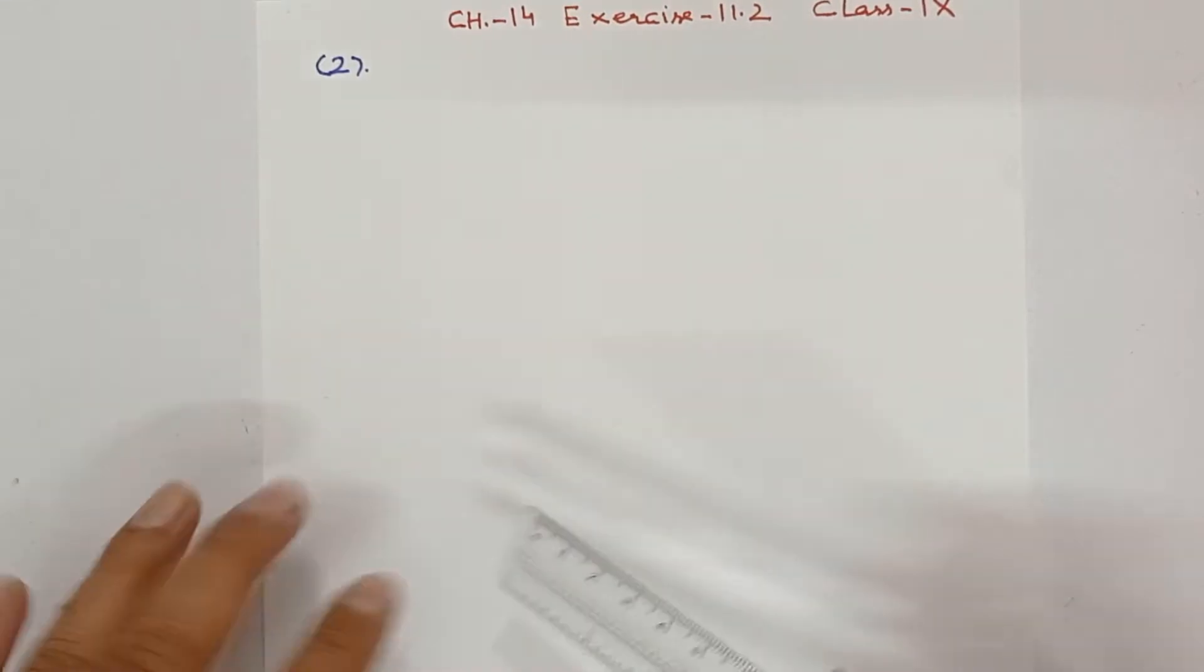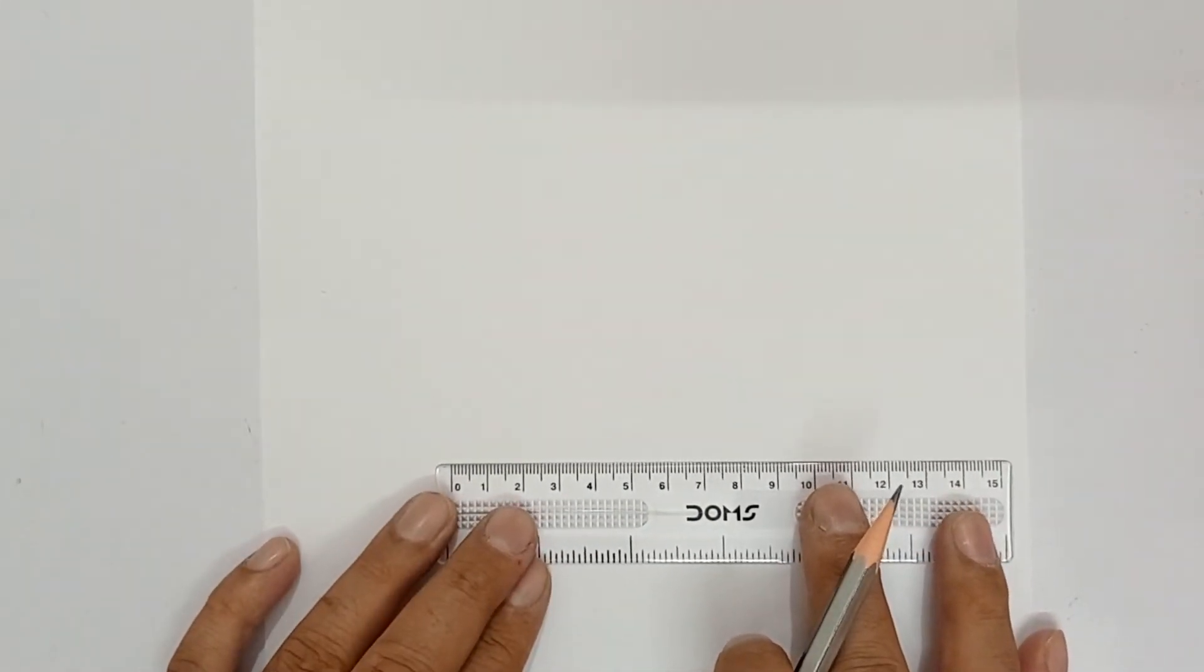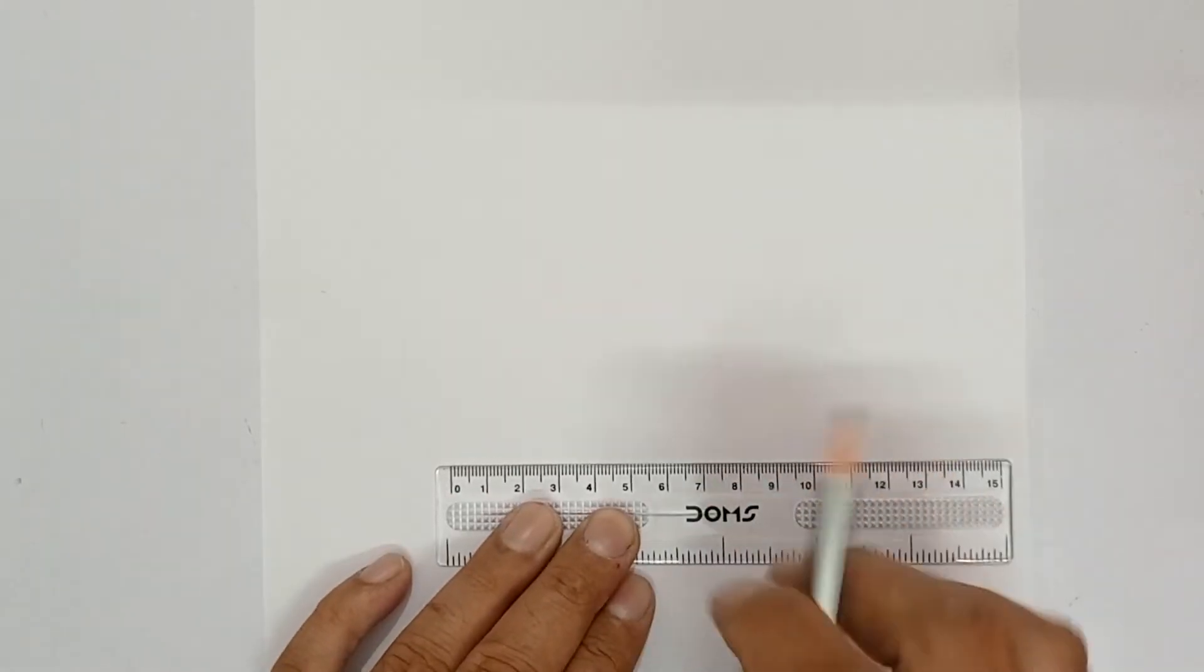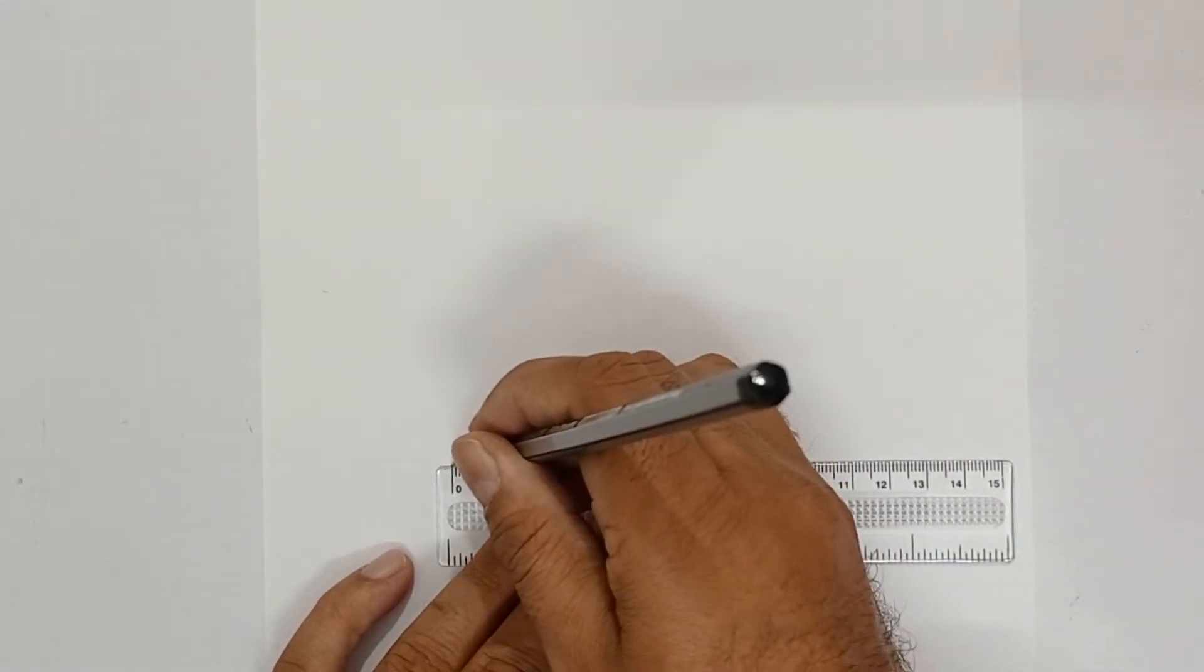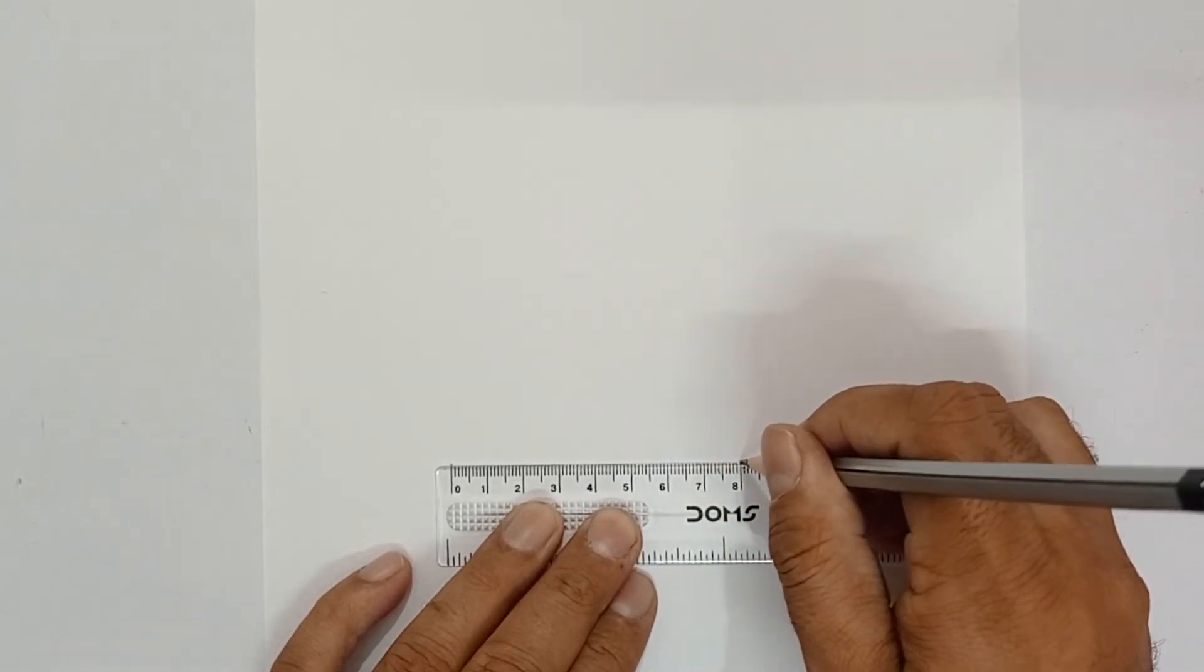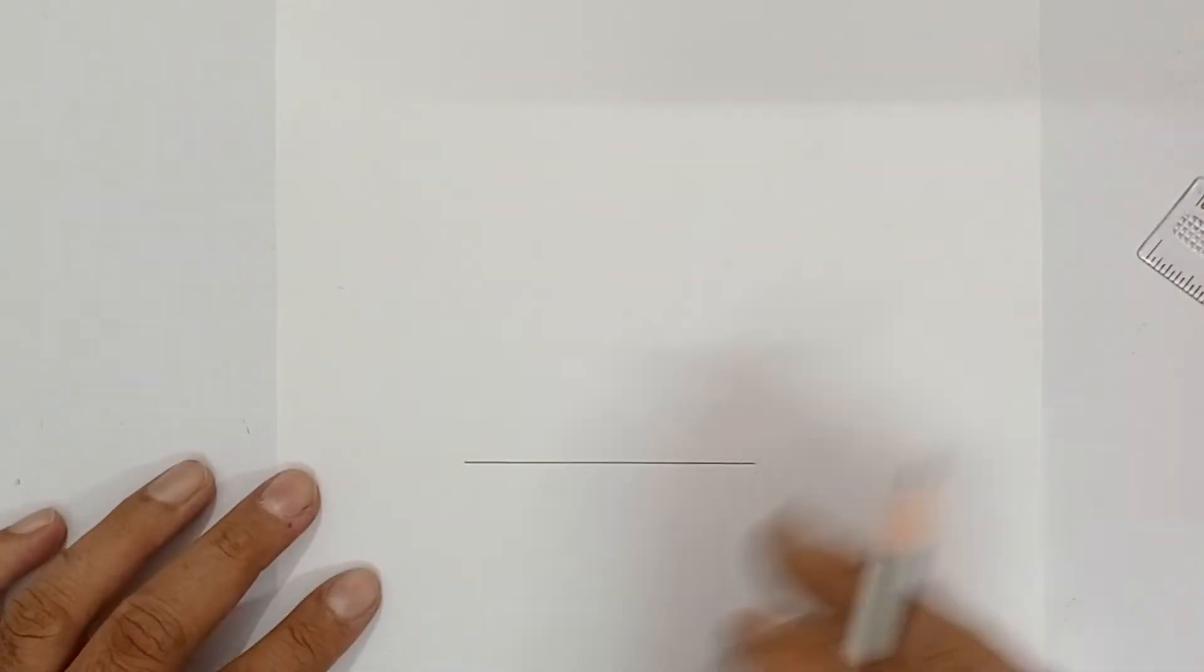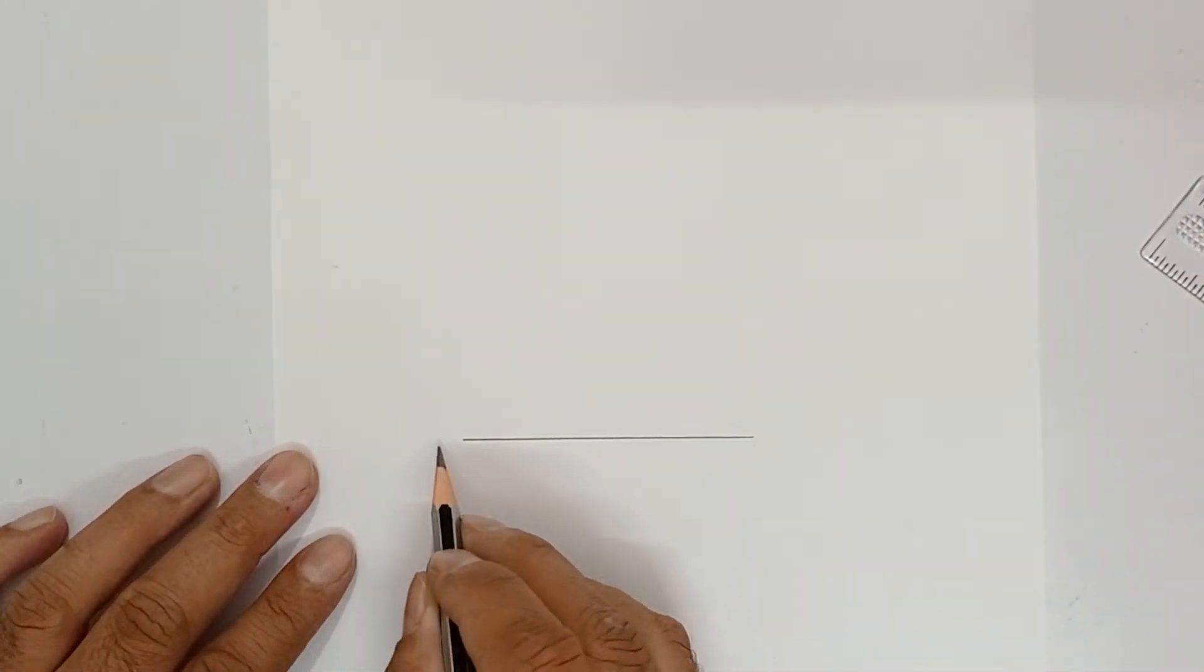First of all, you can do BC 8 cm. Construct line segment. This way I have kept. This is 0 and how much I told 8 cm. This is 8. Join this. And name this as BC.